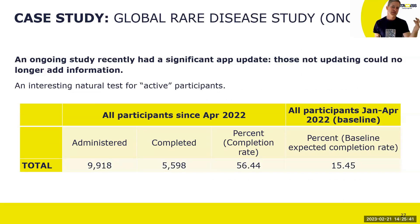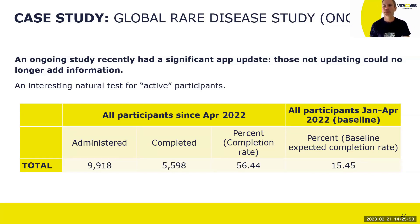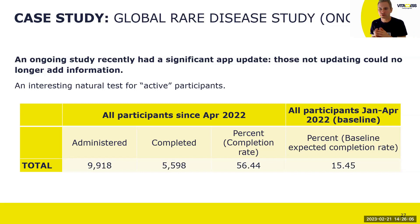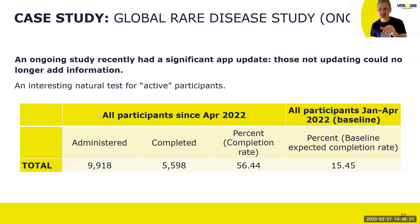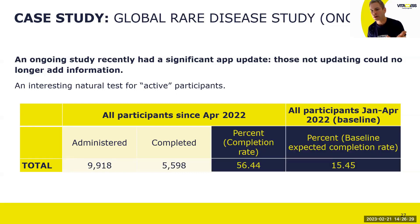Here's an illustration from a study where an app update was introduced. Those who didn't update their app — and you can't force people to update study apps — could no longer provide new data after a certain point. This created a difference when looking at completion rates. As the table shows, there are different numbers depending on whether completion rate is calculated using active participants or a broader denominator: a very nice completion rate when looking at active participants only, but a very different picture if you don't account for participant activation status.